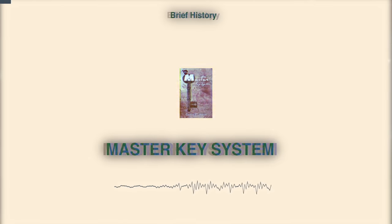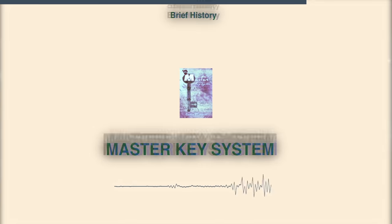For those who don't know, The Master Key System is a book written over a hundred years ago in 1916 by author Charles F. Hannell. Hannell was a philosopher and wealthy businessman who owned several successful businesses. Within the first two decades of the Master Key System book being published, it sold over 200,000 copies. The Master Key System also inspired the authors of The Secret and Think and Grow Rich.